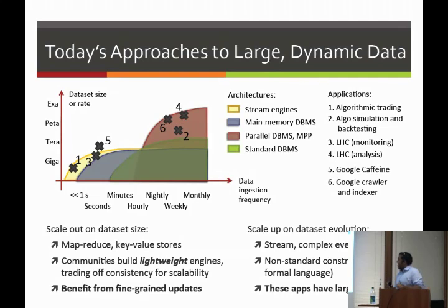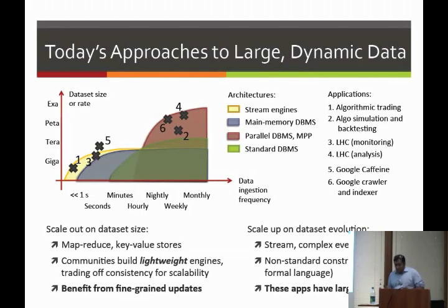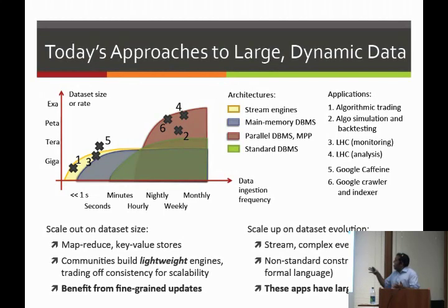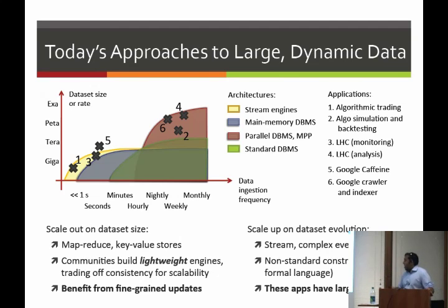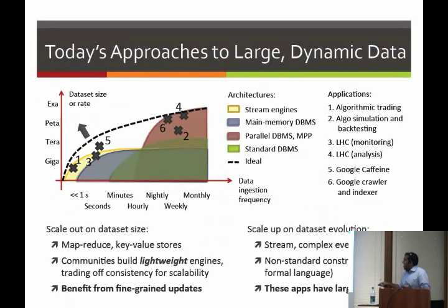Looking at actual applications — algorithmic trading, scientific data, and web indexing — take web indexing, the classical motivation for MapReduce. Recently they introduced incremental indexing called Caffeine, which ends up much further down in this space. The point is, these large datasets actually need to operate on both aspects. You can benefit from fine-grained updates when doing large analysis, and you can end up dealing with large state when working with very dynamic data. The distinction is not necessarily clear. Ideally, we want a flexible architecture that spans the space — the real goal is to deal with very large datasets very quickly, though that's a hard challenge.